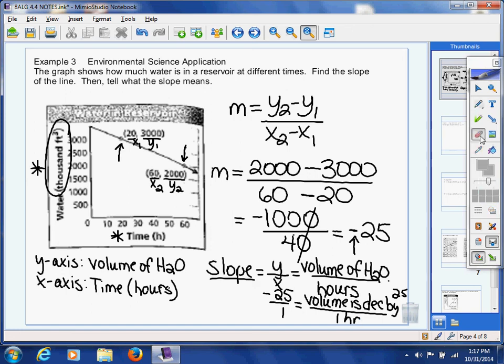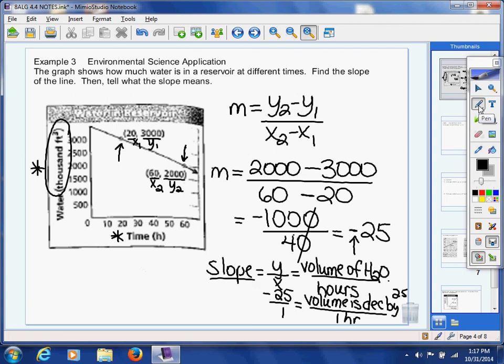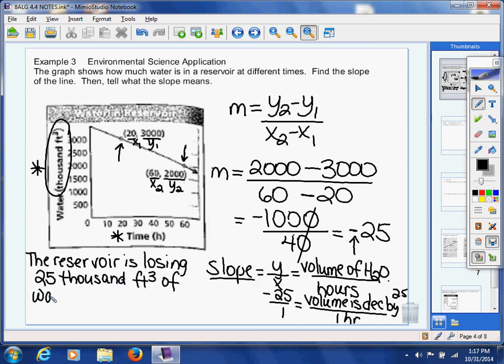Let me erase for just a second so I can write that out for you. You don't erase. You have plenty of room on your paper. I just don't. And that's what we're going to write. The reservoir is losing 25,000 cubic feet of water every hour. And that is the interpretation of the slope.